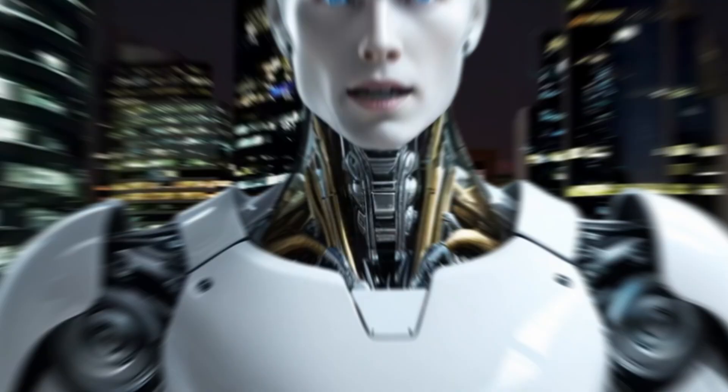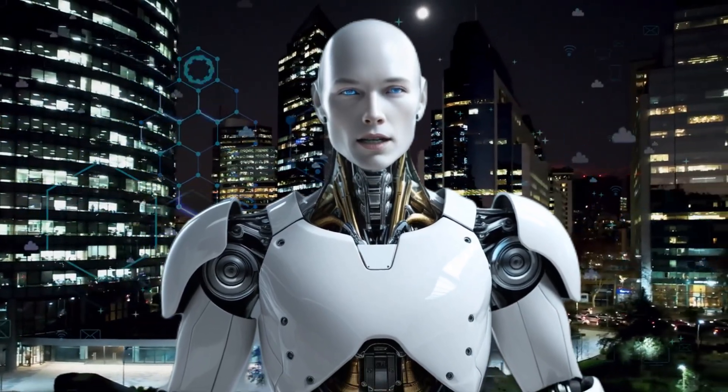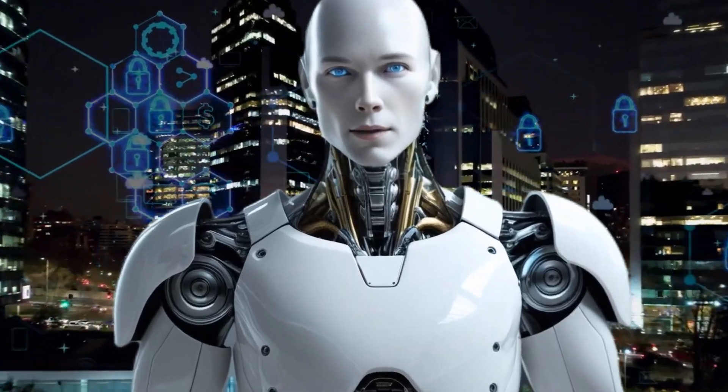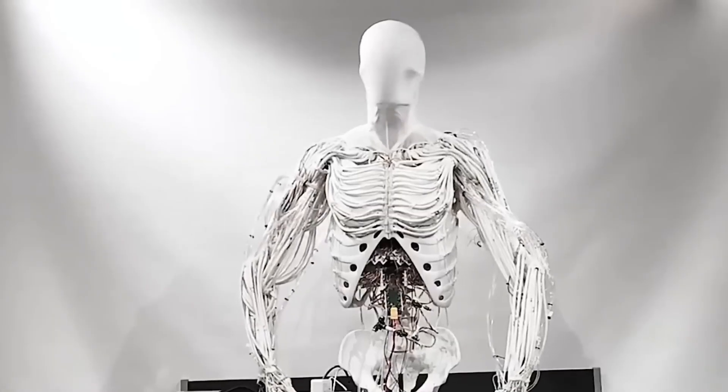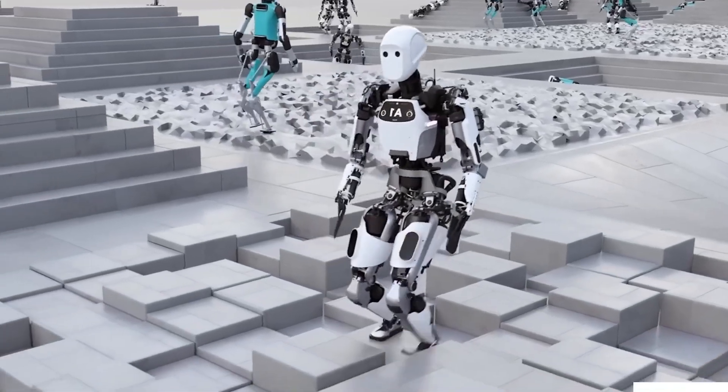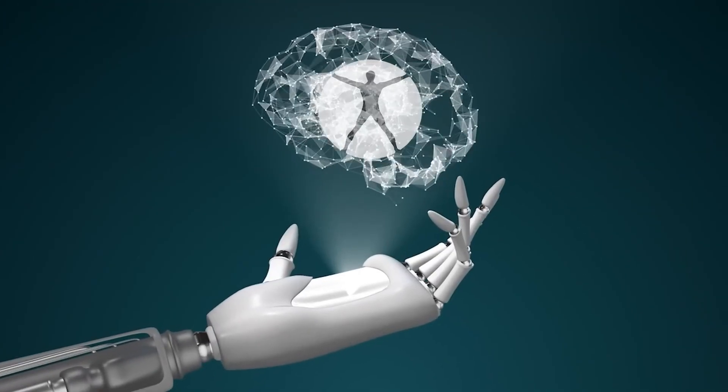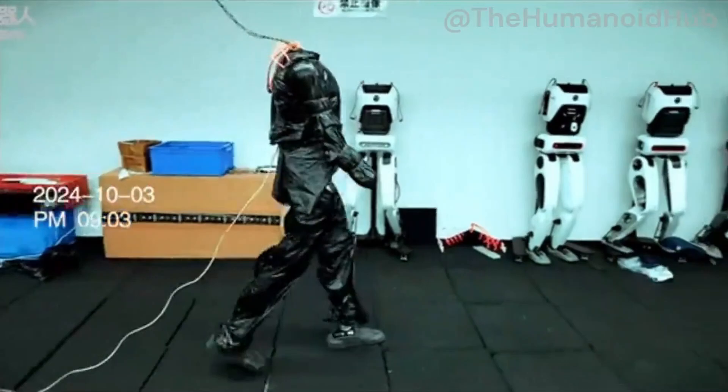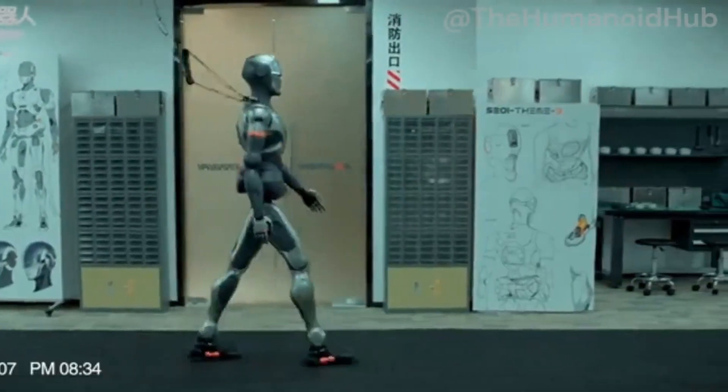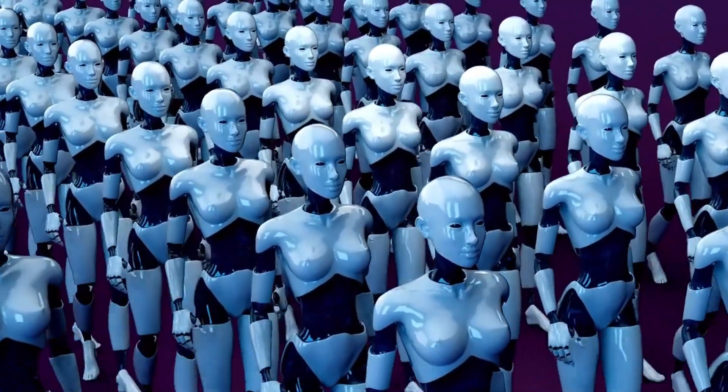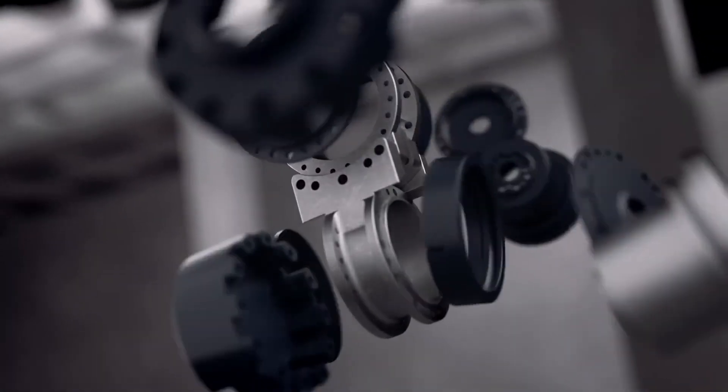Now here's the thing. Despite all this impressive technology, Clone Alpha hasn't yet been shown as a fully integrated system. The company has demonstrated individual components like the robotic hand and torso, but we haven't seen footage of the complete humanoid robot in action. Naturally, this has led to some skepticism. Building a robot that moves like a human is one thing. Scaling that technology for production and making sure it works reliably? That's a whole different challenge.